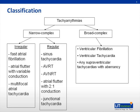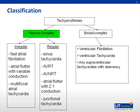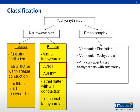This is a simple flowchart showing the classification of tachyarrhythmias. Tachyarrhythmias can be divided into narrow and broad complex tachycardias. Broad complex tachycardias are not in the scope of this lecture. Narrow complex tachycardias are further divided into regular and irregular. Atrial flutter and atrial fibrillation will be covered as part of a cardiology lecture series. I will be focusing on AVRT and AVNRT in this lecture.